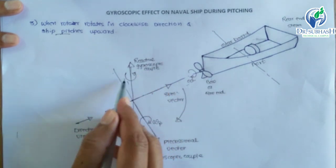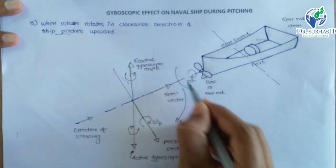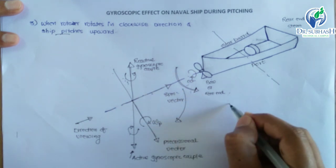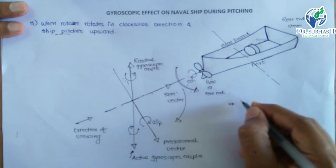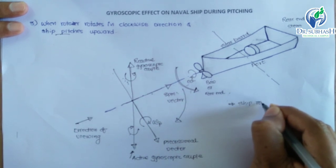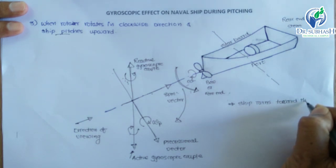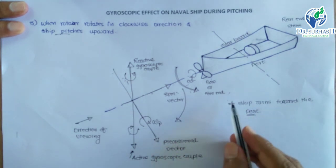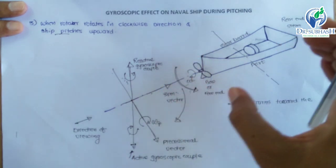If we transfer this reactive gyroscopic couple onto the ship, it is clearly seen that when the rotor rotates in clockwise direction and the ship pitches upward, the ship turns towards the port end.